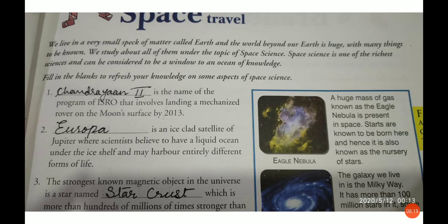Europa is the moon of Jupiter. As you all know, Jupiter has around 79 moons. Europa is the sixth largest moon in the solar system. Europa is an ice-clad satellite of Jupiter where scientists believe there is a liquid ocean under an ice shelf, which may harbor entirely different forms of life, since it has water.